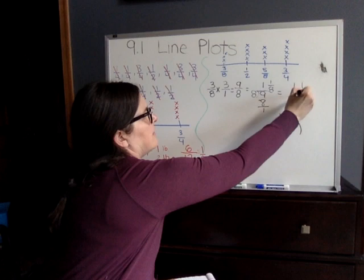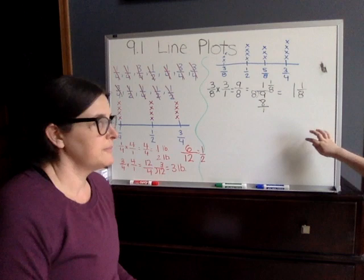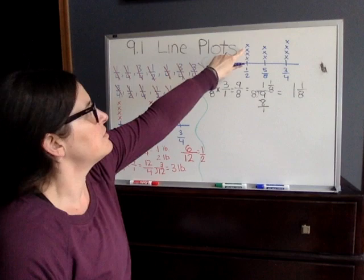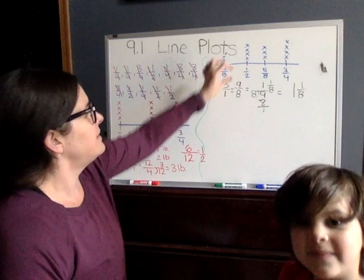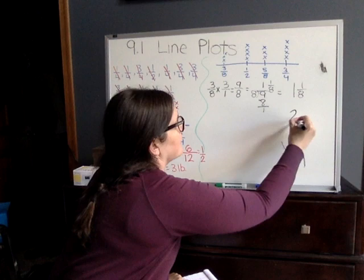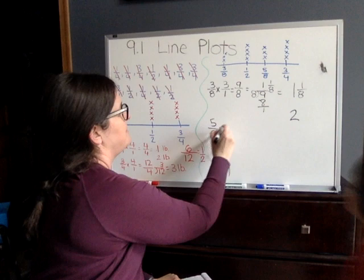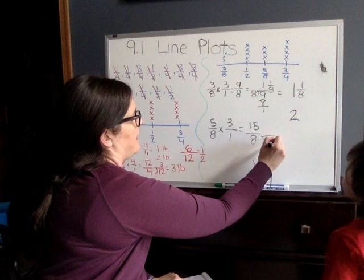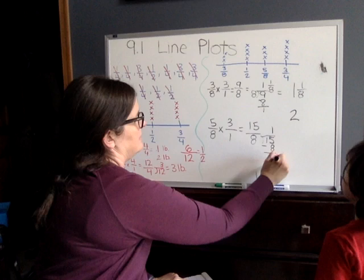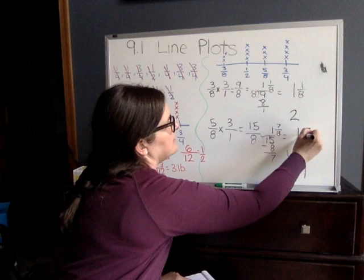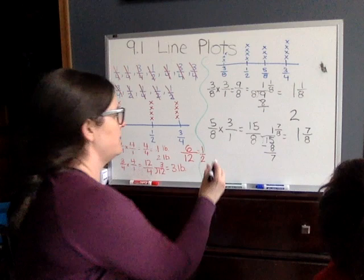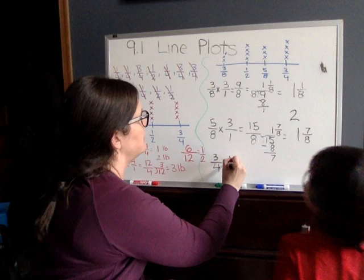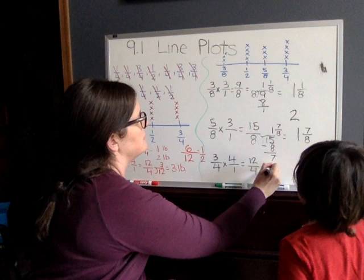For one half, we have four crystals. One half plus one half is one whole, and the other two make another whole — so one half times four equals two. Next, five eighths times three: five times three is fifteen over eight. Eight into fifteen goes one time with seven remaining, giving one and seven eighths. Finally, three fourths times four: that's twelve fourths, which equals three wholes.